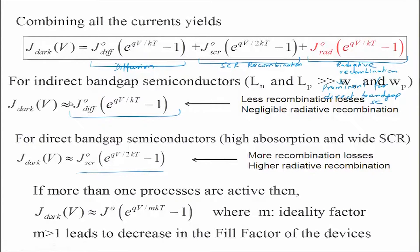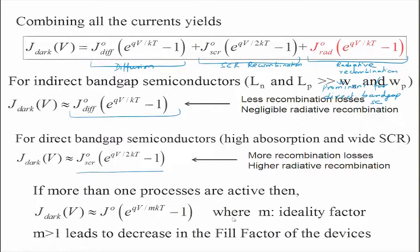For an indirect band gap semiconductor, radiative recombination is lower and space charge recombination is lower as well. If the diffusion lengths are larger than the space charge region width, then the dark current is predominantly diffusion-limited. For direct band gap semiconductors, which have high absorption and wide space charge regions, carriers do recombine — giving more recombination losses and high radiative recombination — and this gives rise to a dependence of qV/2kT. Generally we see more than one process active.